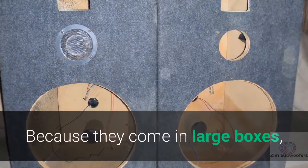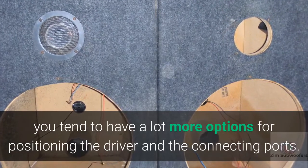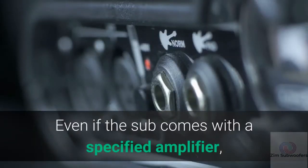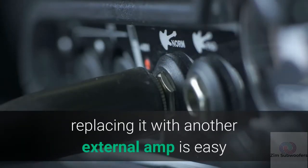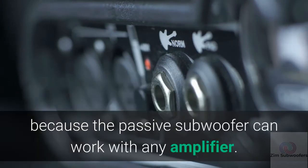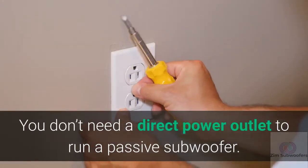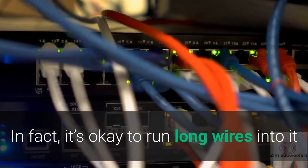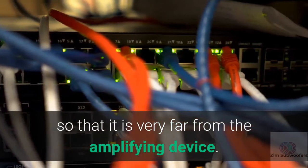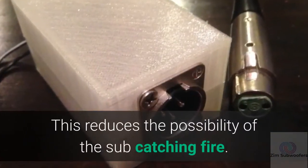Because they come in large boxes, you tend to have a lot more options for positioning the driver and the connecting ports. Even if the sub comes with a specified amplifier, replacing it with another external amp is easy because the passive subwoofer can work with any amplifier. You don't need a direct power outlet to run a passive subwoofer. In fact, it's okay to run long wires into it so that it is very far from the amplifying device. This reduces the possibility of the sub catching fire.